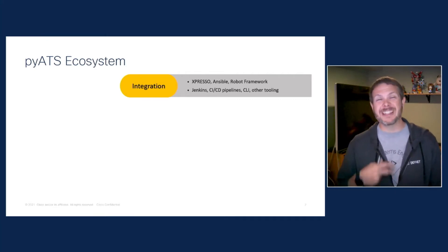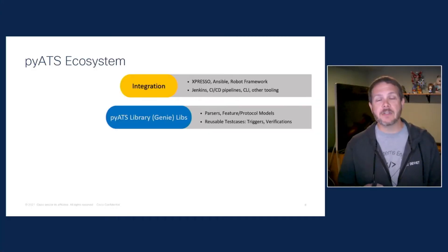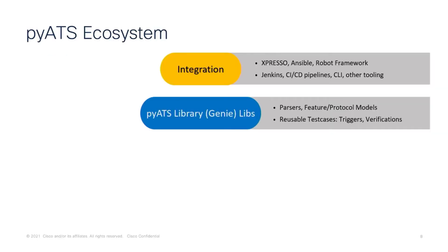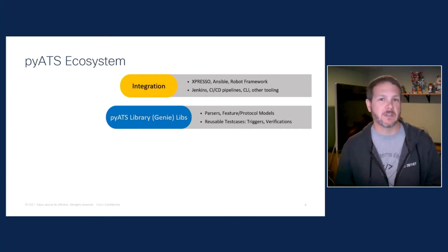The real meat of what PyATS offers, at least in my opinion, is the library of parsers, models, triggers, and verifications that are often referred to as the Genie library. A PyATS parser allows an engineer to take a commonly used show command like 'show IP interfaces' and immediately convert that directly into a Python object that is easy to work with in an automated fashion. Or maybe you want to talk about entire protocols or features — that's what the models are for. I can do something like learn everything about routing all at once in a platform and version agnostic fashion. And as you become more robust and want to do things like remove the configuration for BGP and then put it back and see if your network behaved as expected, triggers and verifications can help you with that.